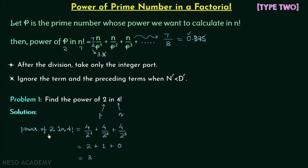So the highest power of 2 — remember, this is the highest power — in 4 factorial is equal to 3.